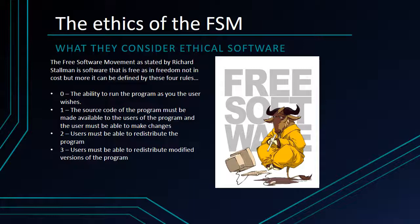Finally, rule number three: users must be able to redistribute modified versions of the program. This is a lot like rule two, but the difference is that whatever changes you make to the source code given to you in rule one, you can then redistribute the software with those changes. So if I make a super custom version of PowerPoint, I can go ahead and redistribute — which also means sell — that version to other people. These are the four rules that make software free. If software doesn't fit into any of these rules, it is automatically considered not free software.